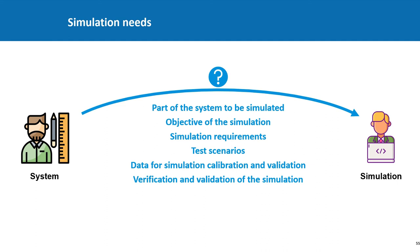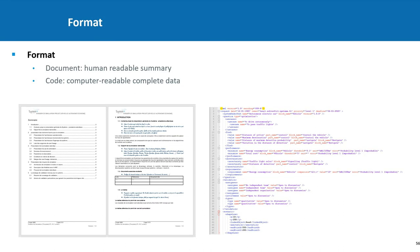We've just been through all the information to include in the simulation needs. Regarding the format, we said it was important to have formal, traceable, complete data, so it requires a computer-readable code like XML. We developed a prototype to export the simulation needs as XML, for example. But it's also important to have a human-readable summary in a Word document. Many SysML editors work on the export of documents, but it would need to be adapted. And as mentioned, diagrams are sometimes too big for a document.